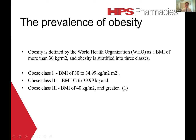Obesity is defined by the WHO as a BMI of more than 30, and obesity is stratified into three categories. Obese class one includes persons with a BMI of 30 to 34.99 kilograms per meter squared. Obese class two includes a BMI of 35 to 39.99, and obese class three is a BMI of 40 kilograms per meter squared or greater.